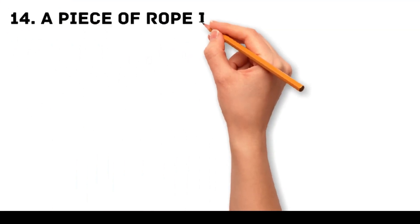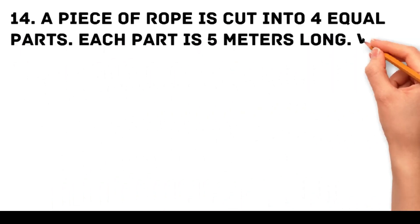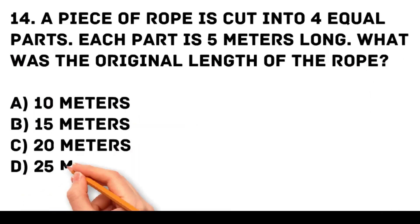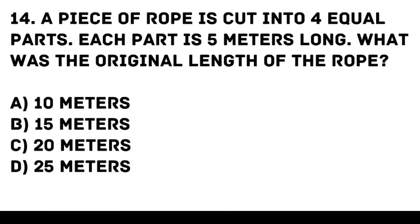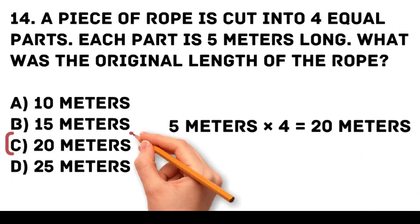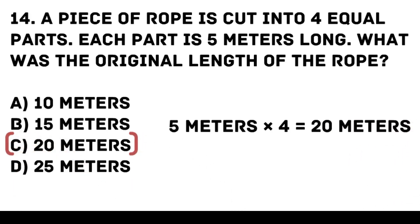Question 14. A piece of rope is cut into 4 equal parts. Each part is 5 meters long. What was the original length of the rope? A. 10 meters. B. 15 meters. C. 20 meters. D. 25 meters. Answer: C. 20 meters. Multiply the length of one part by the number of parts. 5 meters times 4 is equal to 20 meters.